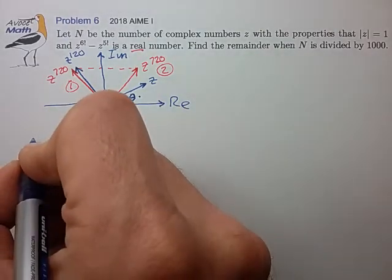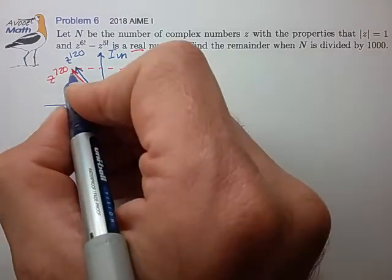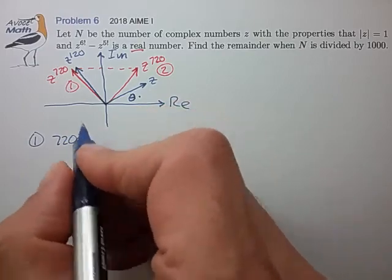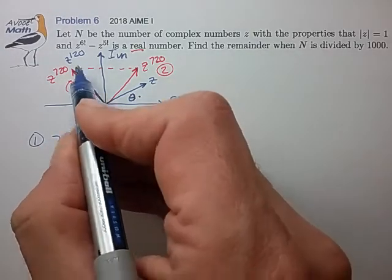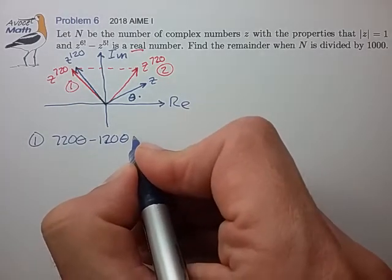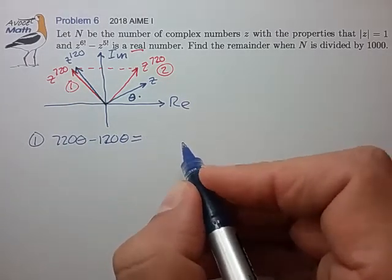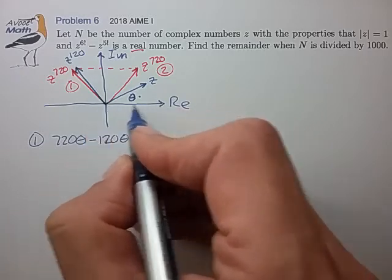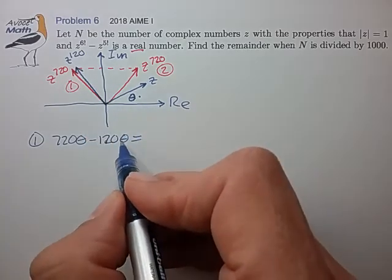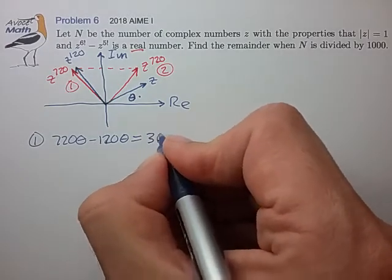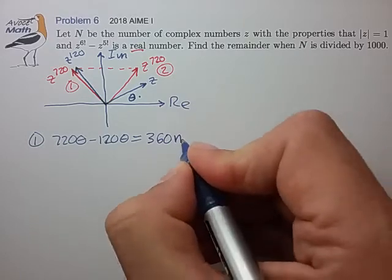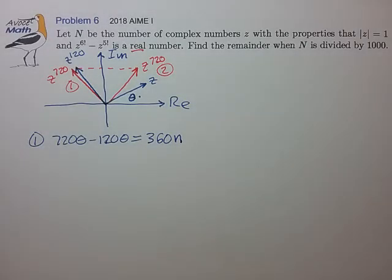For case 1, we have that 720θ, using DeMoivre's theorem, minus 120θ has to land you onto the real axis. So what that means is that theta is going to be some multiple of 360. We'll say 360 times some positive integer n.